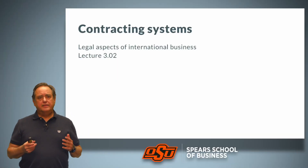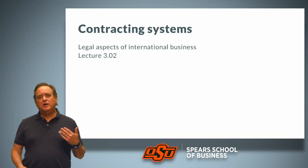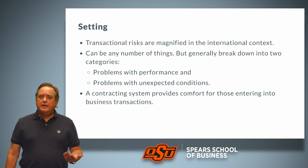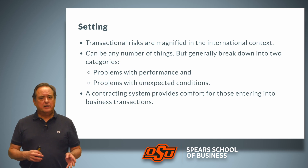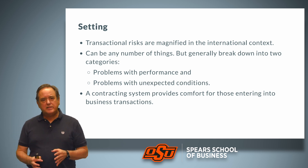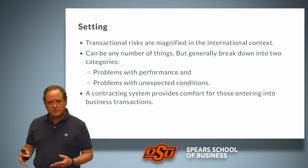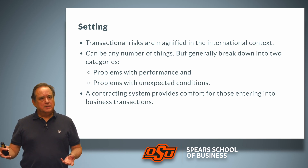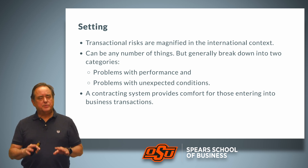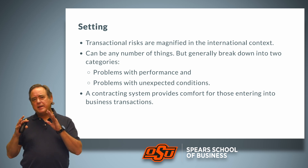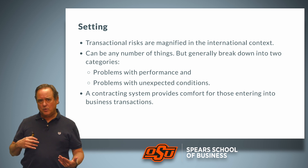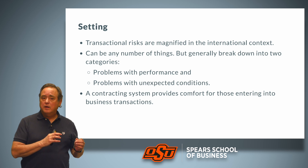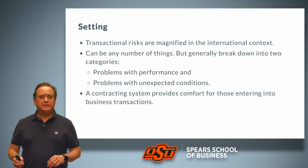Welcome back. In this lecture we take up the question of contracting systems. We know that there are risks in international sales, and that the risks in any sales transaction are magnified in the international context. These risks can be any number of things, but generally they break down into two categories: problems with performance, or problems with unexpected conditions.